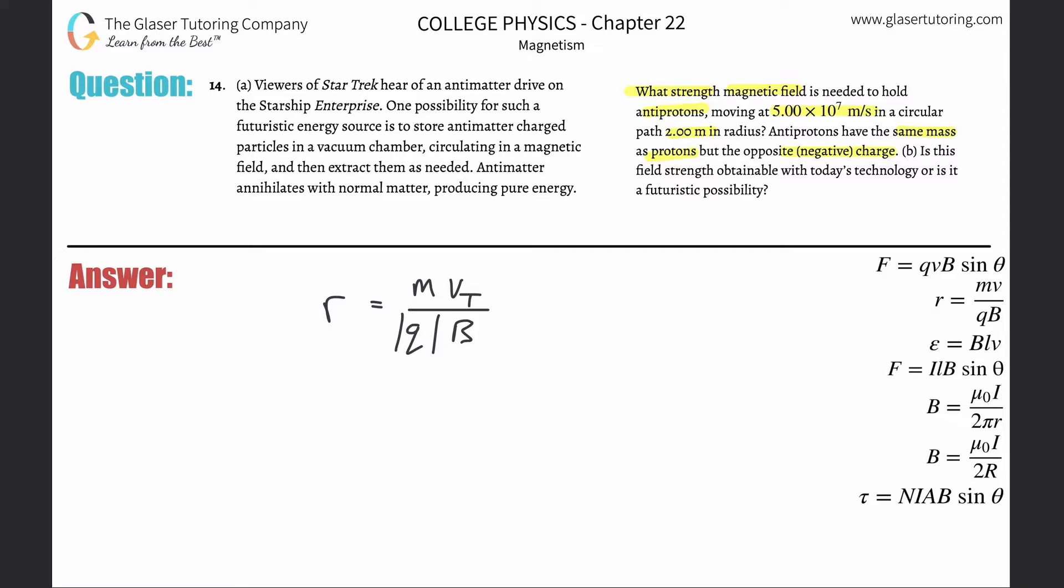Now if we're asked to solve for the magnetic field strength, literally just do a little switcherouski. Just cross multiply those terms across and look, there it is, you solved it. It takes not even two seconds.